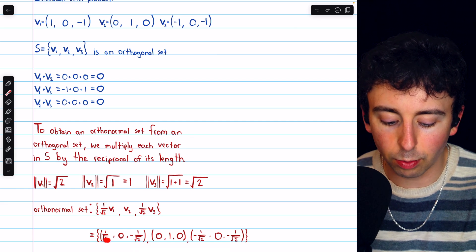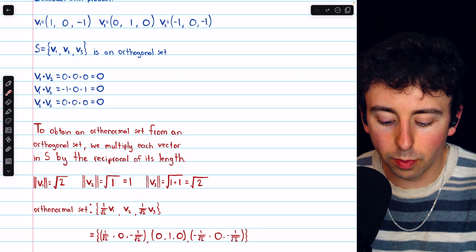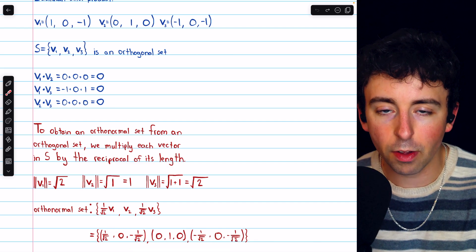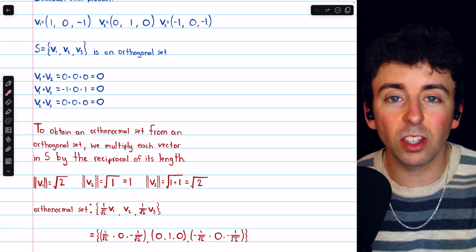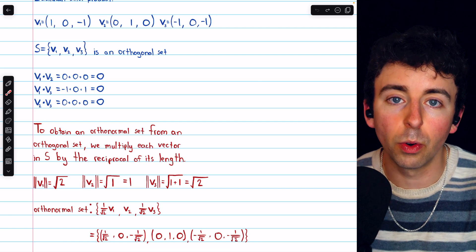1 over root 2 V1 is written there, V2 is written there, and 1 over root 2 V3 is written there. So these vectors are all orthogonal to each other, but furthermore they are all unit vectors with norm 1. And so this is an orthonormal set.